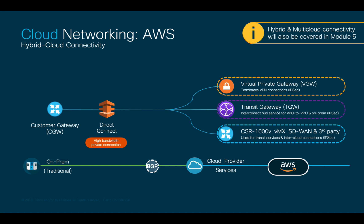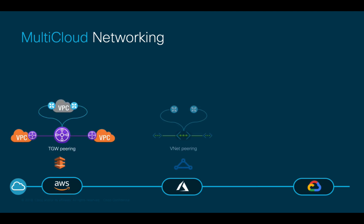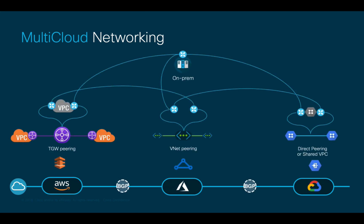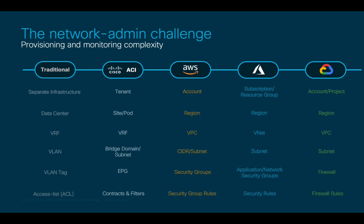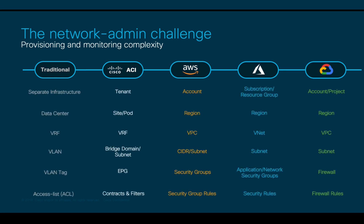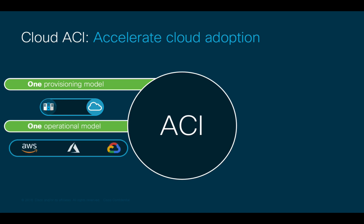Direct Connect may run directly to the cloud provider facilities or through a co-location partner. These same concepts apply to all cloud providers with their specific names and differences. If you now add your on-premises environment to the mix, network administrators in a hybrid cloud environment may find operational challenges to provision, monitor, and secure the network consistently. This is where Cloud ACI may help, since you only need to learn one networking model, not many, allowing you to normalize network operations across multiple clouds.